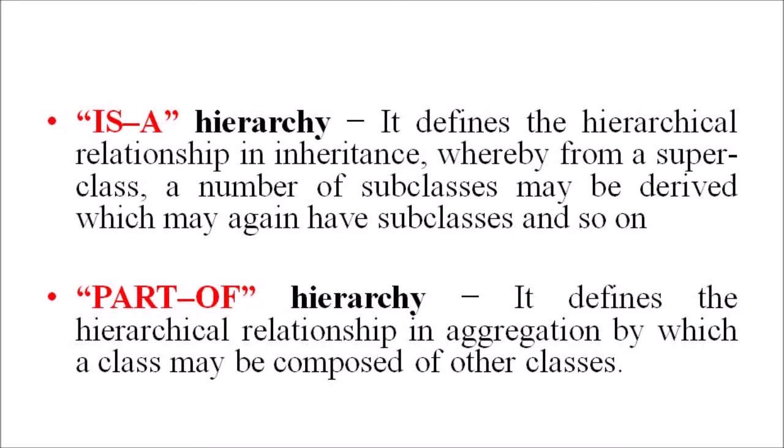The second hierarchy is the part-of hierarchy. It defines the hierarchical relationship in aggregation, by which a class may be composed of other classes. For example, a flower is composed of sepals, petals, stamen, and carpel. It can be said that a petal is a part of a flower.